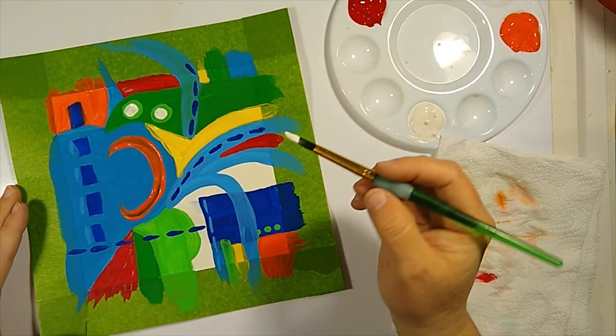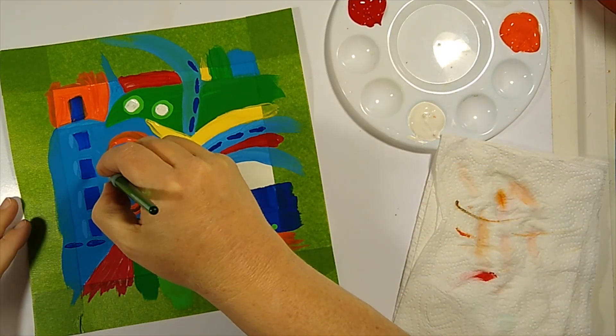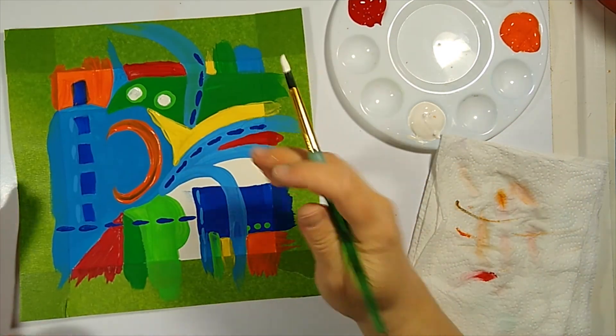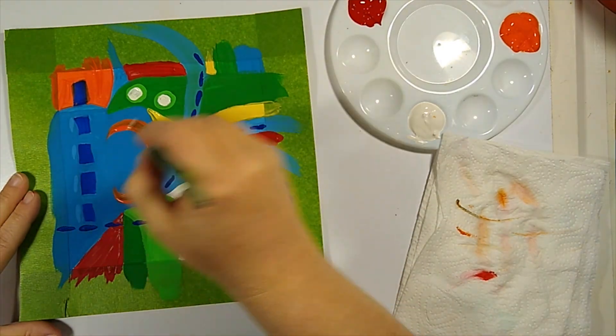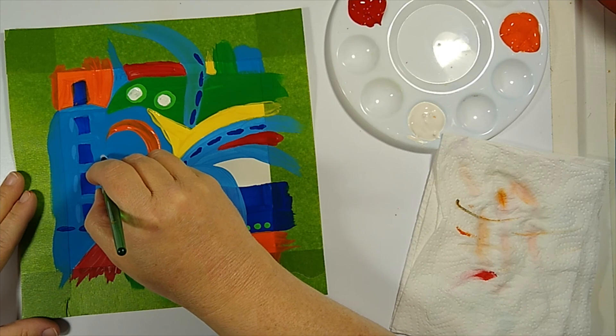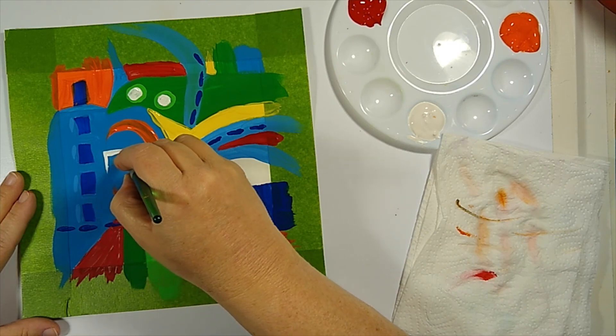Alright. And then maybe we just want to have, why don't we look at this arc goes that way. So maybe let's just put a simple square of white on top of this really dry blue.